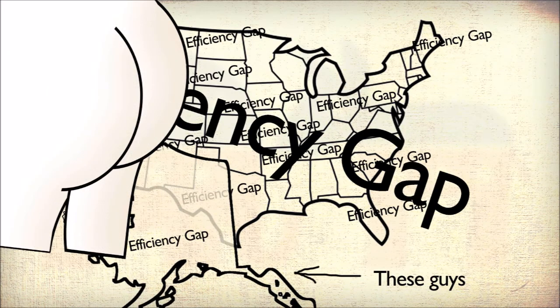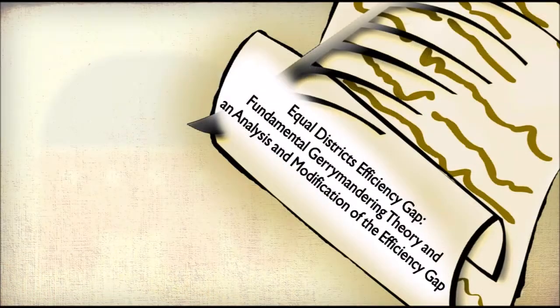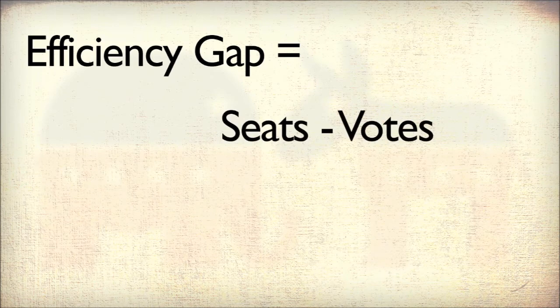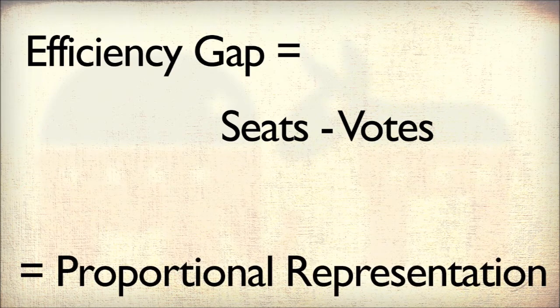But in a recently published paper titled 'The Equal Districts Efficiency Gap: Fundamental Gerrymandering Theory and an Analysis and Modification of the Efficiency Gap,' it is shown that the efficiency gap can be calculated not by using wasted votes as has been done to date, but by using an equation of only two variables: the percentage of seats won by a party and the percentage of votes won by that party. In other words, the paper shows that the efficiency gap is a measure of proportional representation.